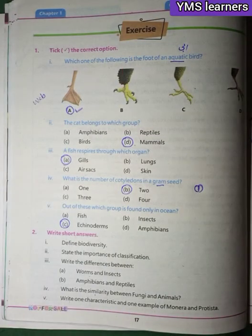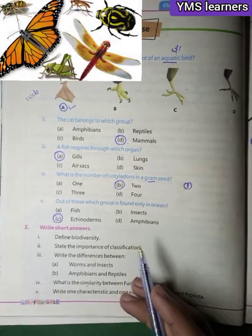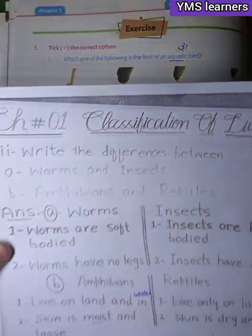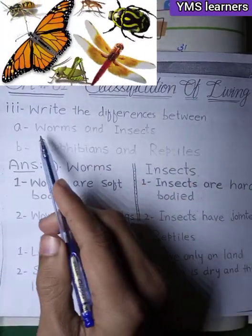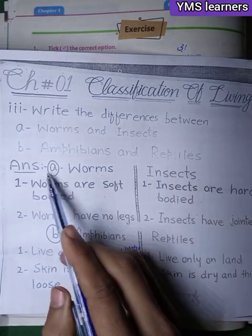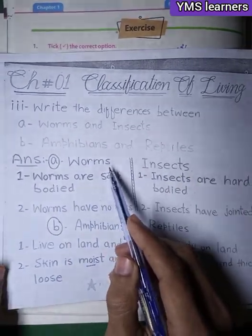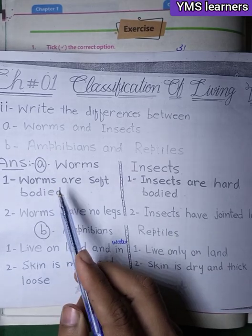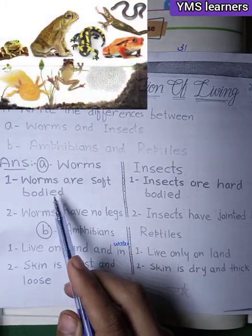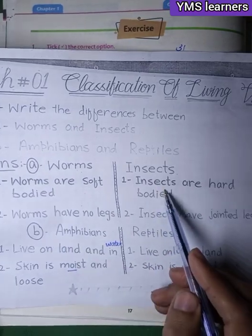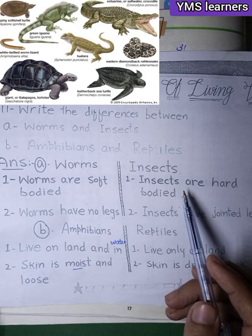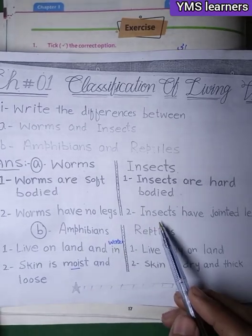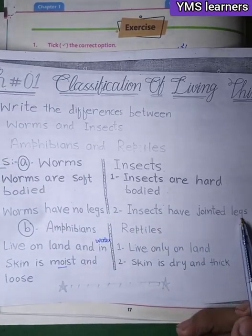The next question asks for the difference between worms and insects, and between amphibians and reptiles. Worms are soft-bodied and have no legs. Insects are hard-bodied and have jointed legs.